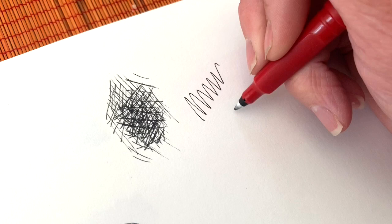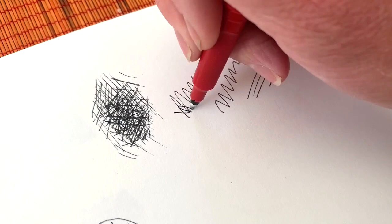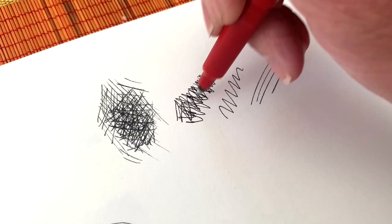You can also experiment with different types of marks. You could use straight lines or scribbled lines, cross-hatch over the scribbled lines, and all of these will create different effects with the pen.